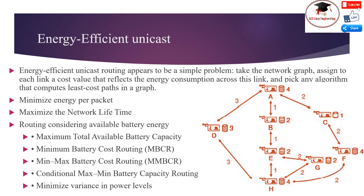Maximizing the network lifetime is clearly a useful goal. As the finite energy supply is the limiting factor to network lifetime, it stands to reason to use information about battery status in routing decisions. One possibility is to maximize total available battery capacity: choose the route where the sum of available battery capacity is maximized without taking needless detours. Looking only at intermediate nodes in the figure, route A, B, E, G, H has a total available capacity of 6 units, but that is only because of extra node G that is not really needed. Such detours can arbitrarily increase this metric.